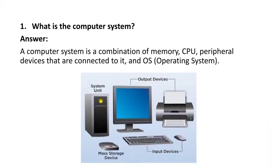Very first question: what is a computer system? This is a commonly asked question. A computer system is a combination of memory, CPU — that is central processing unit — peripheral devices that are connected to it, and the operating system.